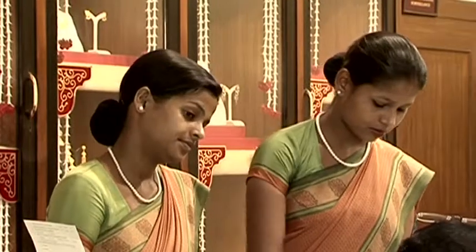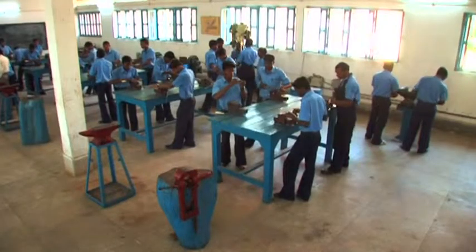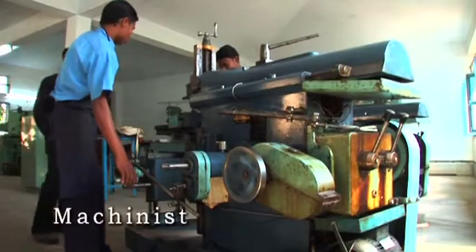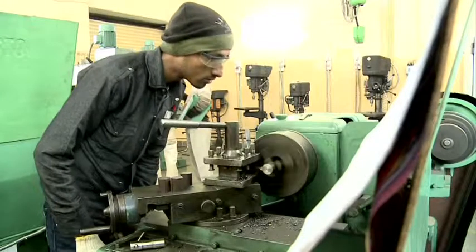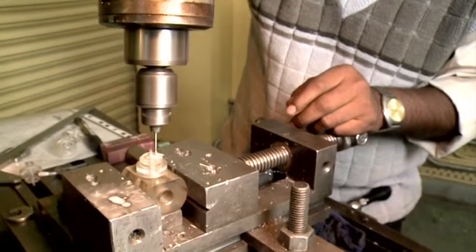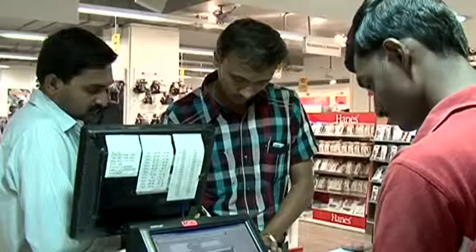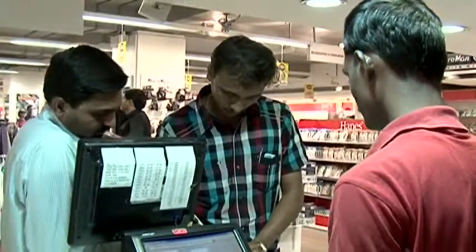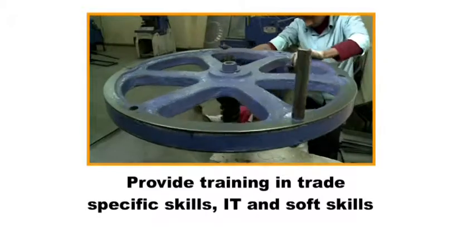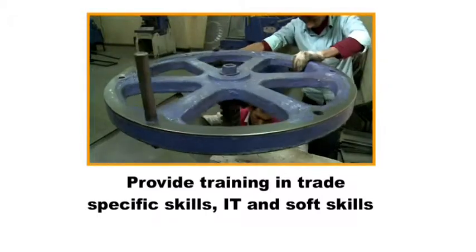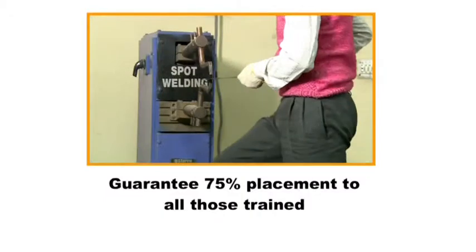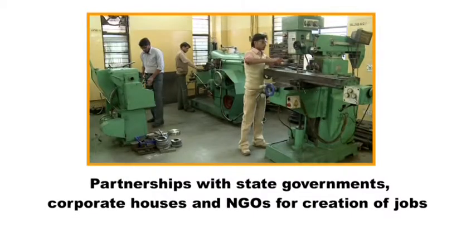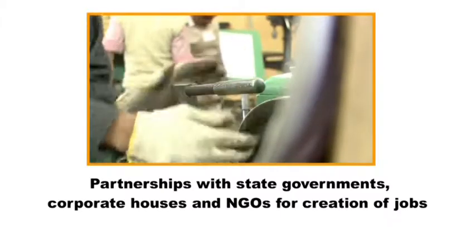Aajeevika caters not only to women, but also fulfills the occupational aspirations of rural youth. The Aajeevika Skill Development Programme seeks to reduce poverty by diversifying the incomes of the rural poor, providing training in trade-specific skills, IT and soft skills, guaranteeing 75% placement to all those trained, and forming partnerships with state governments, corporate houses, and NGOs for creation of jobs.